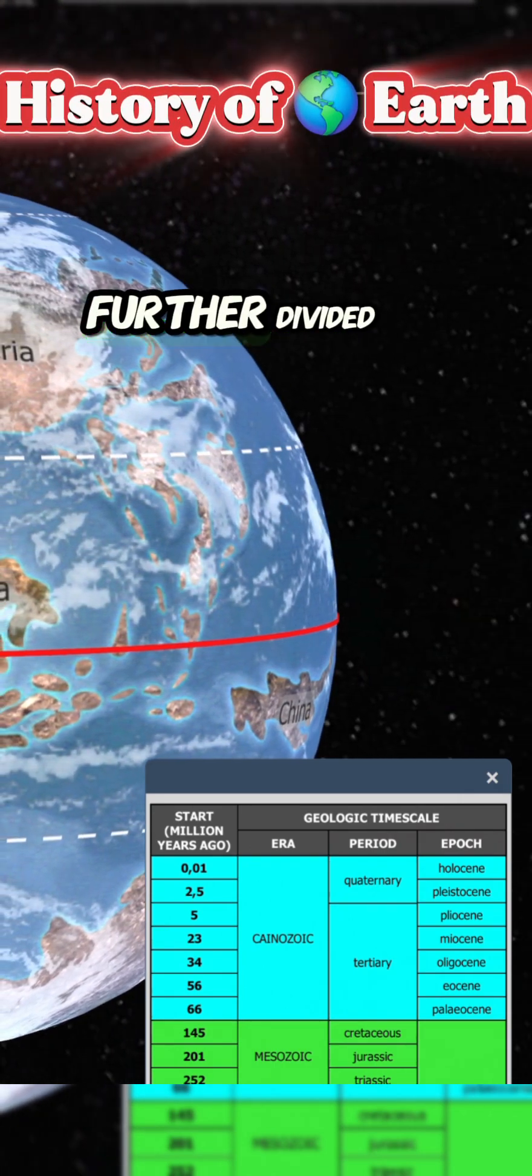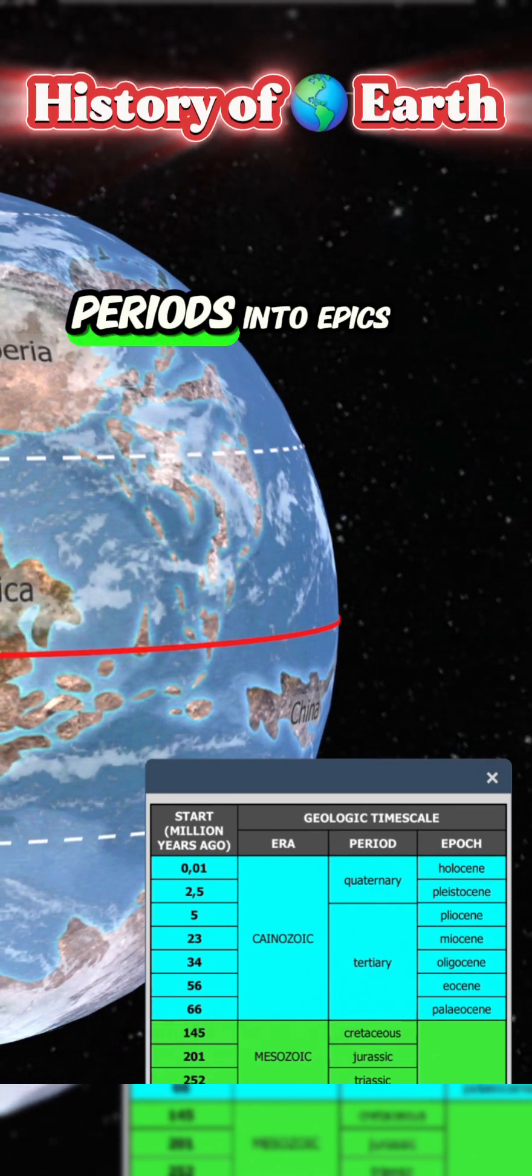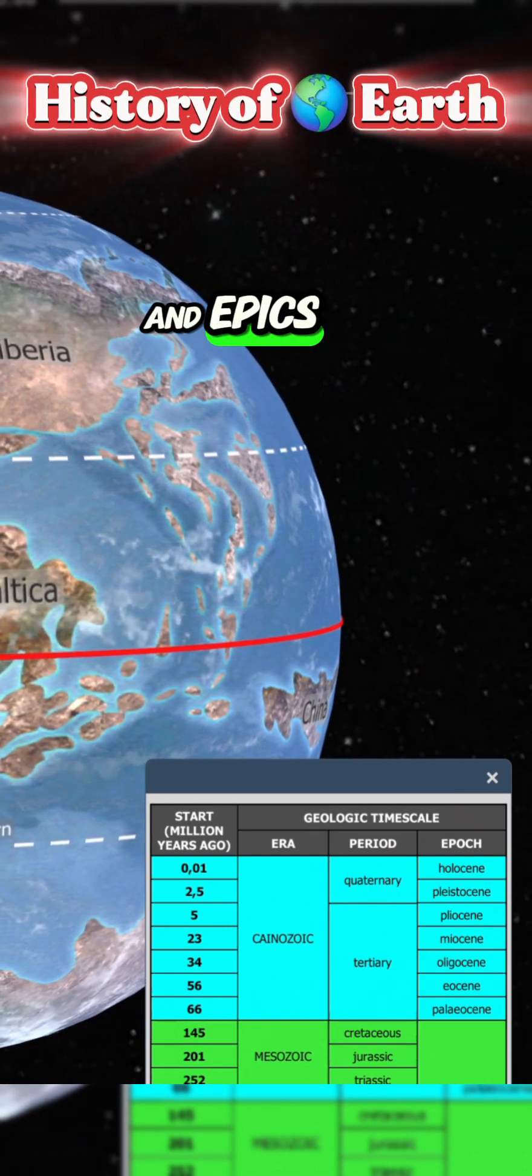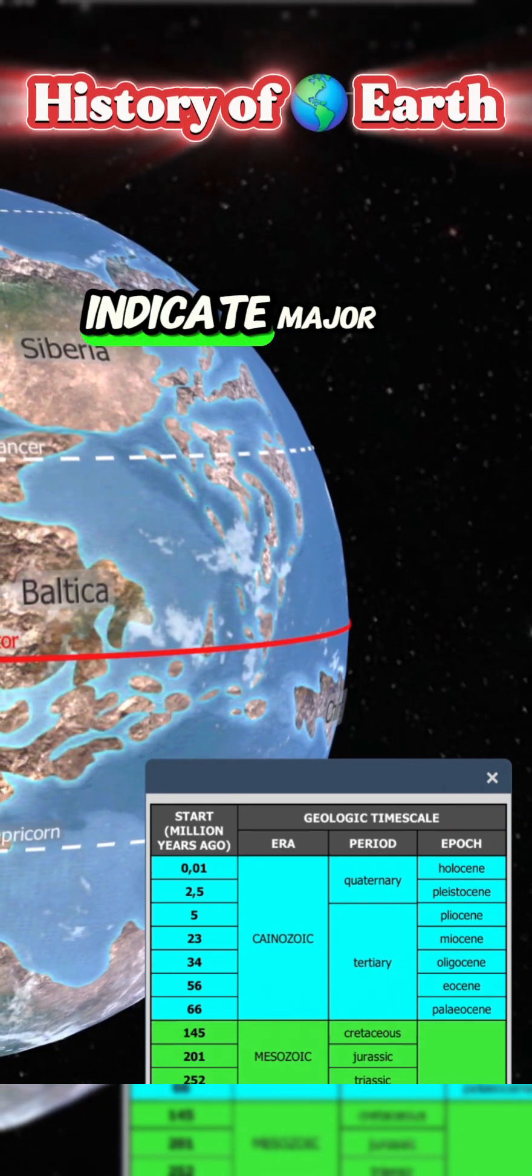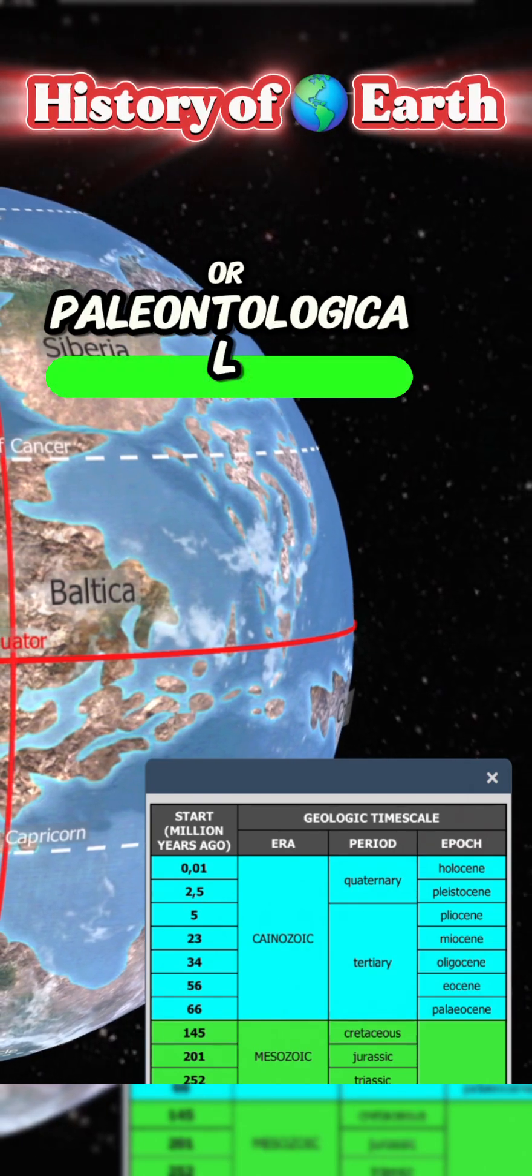Eras can be further divided into periods, periods into epochs, and epochs into ages. The boundaries of each stage indicate major geological or paleontological events.